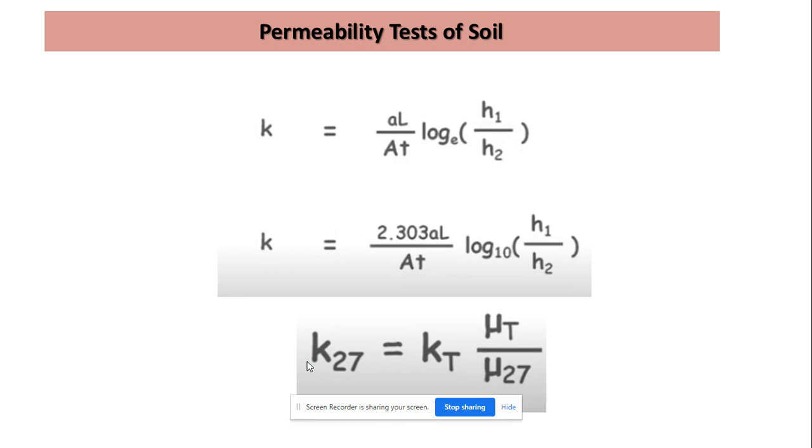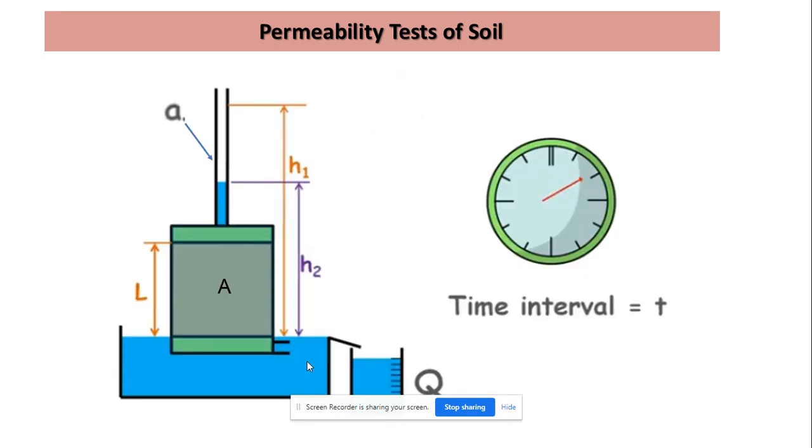If we look at the experiment, in the lab we need to take two readings. One reading is for head, that is h1 and h2, the fall in head. Another reading is the time taken for this fall, so we need a stopwatch to check in what time interval this fall in head has taken place from h1 to h2.